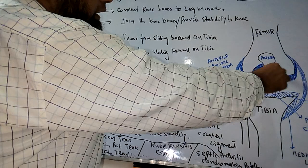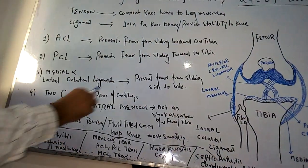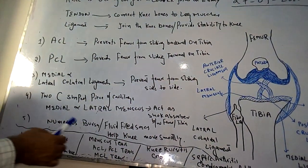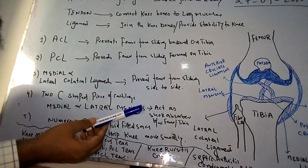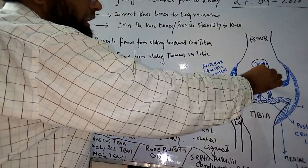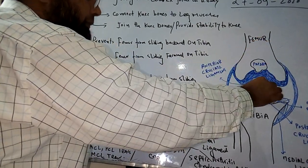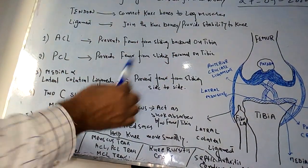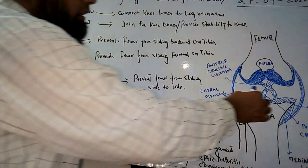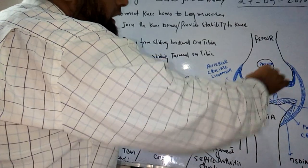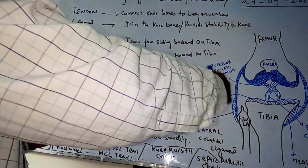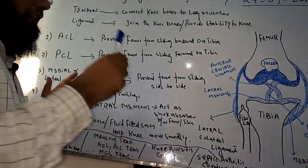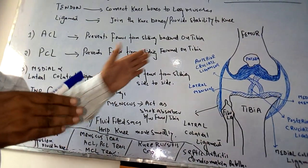There are two C-shaped menisci — two pieces of cartilaginous tissue. The meniscus acts as a shock absorber between the femur and the tibia. There is also another important structure: numerous bursae. In some spaces of the knee, fluid is filled, and inflammation of this is called bursitis. Sometimes these fluids help in the smooth movement of the knee.